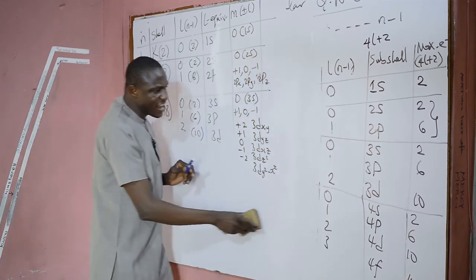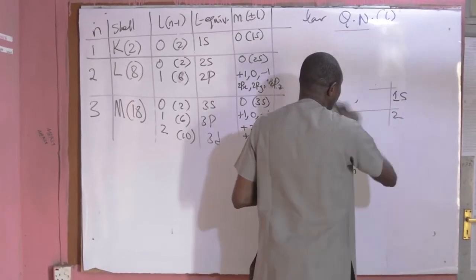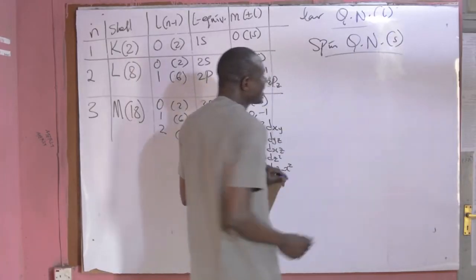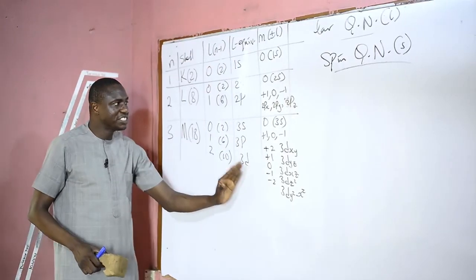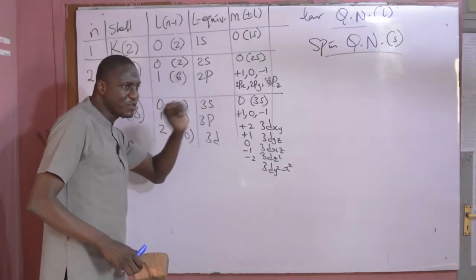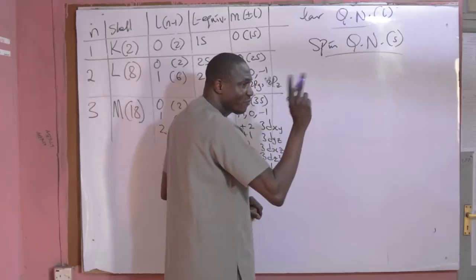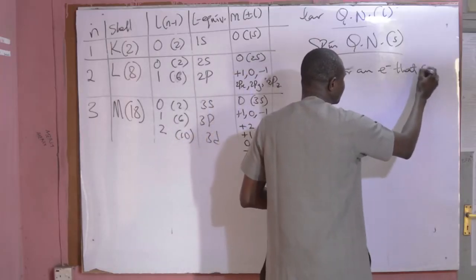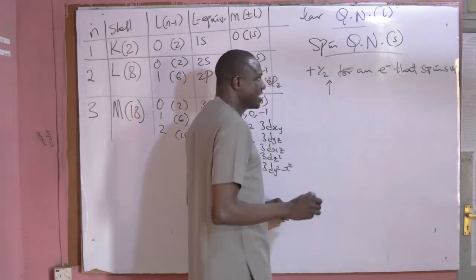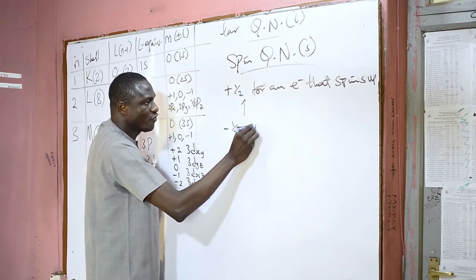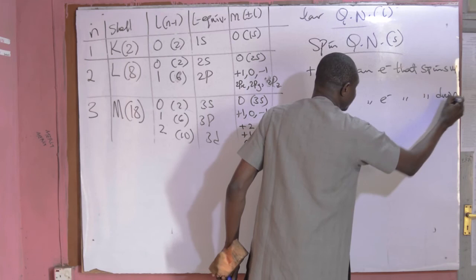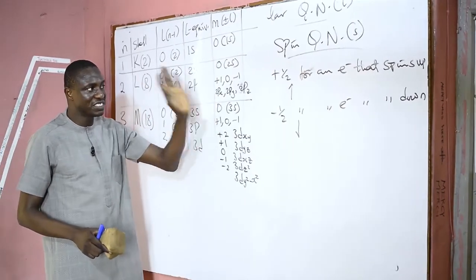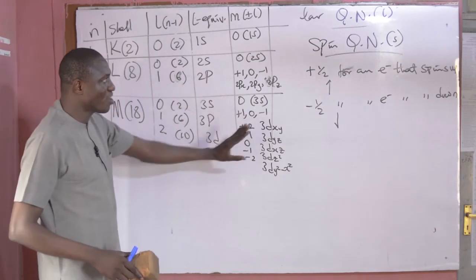Now, the last quantum number is the spin quantum number, represented as S or MS. This indicates the spatial orientation of an electron in each orbital. The spin quantum number takes either of two values: plus half for an electron that spins up, and minus half for an electron that spins down. No two electrons in the same orbital can have the same possible set of the four quantum numbers.